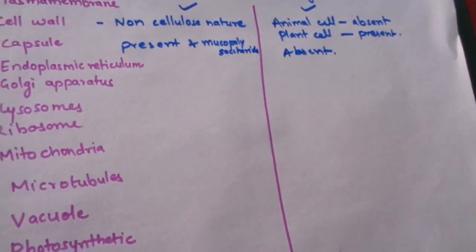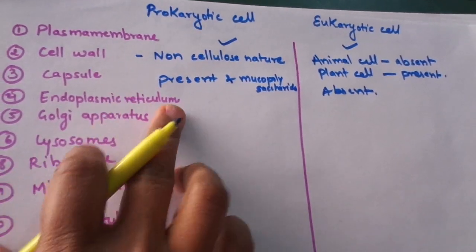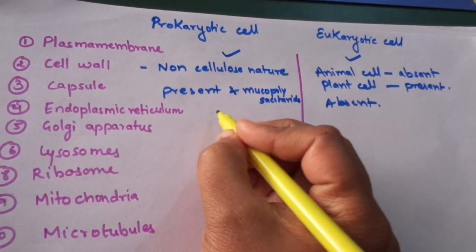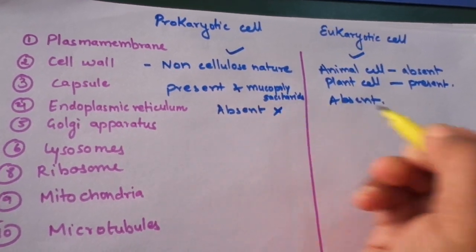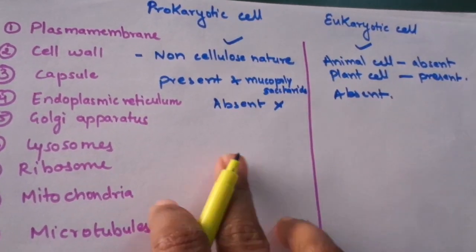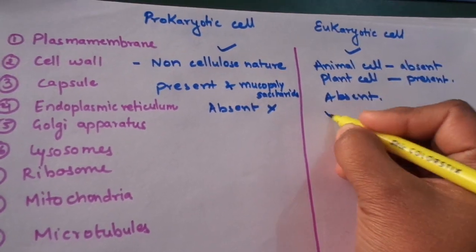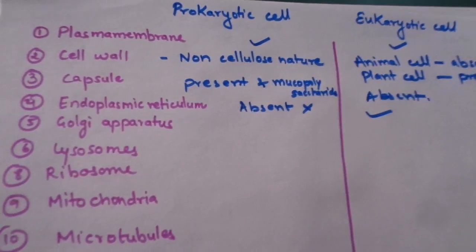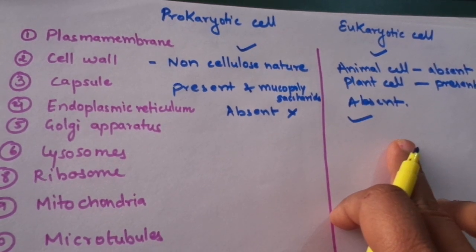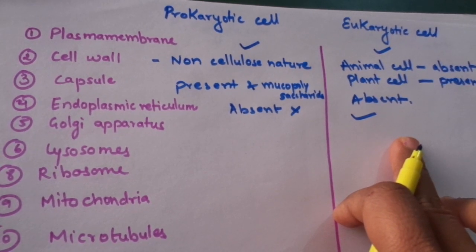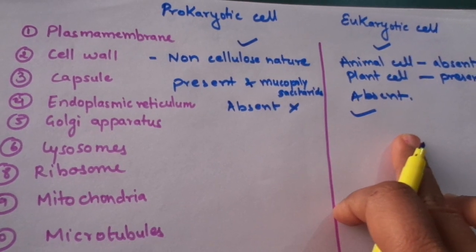The next difference is the endoplasmic reticulum. It is absent in the case of the prokaryotic cells and present in the eukaryotic cell. The role of endoplasmic reticulum in the eukaryotic cell is associated with synthesis and cellular transport.